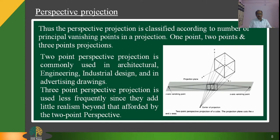Thus, perspective projection is classified according to the number of principal vanishing points: one-point, two-point, and three-point projections. Two-point perspective projection is commonly used in architectural engineering, industrial design, and advertising drawings. Three-point perspective projections are used less frequently, since they add little realism beyond that afforded by the two-point perspective.